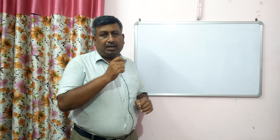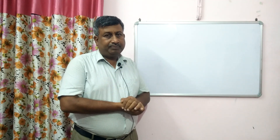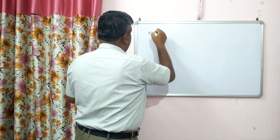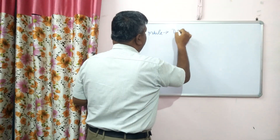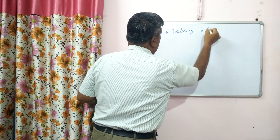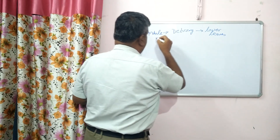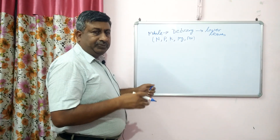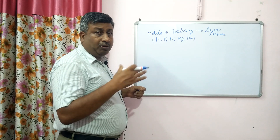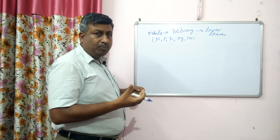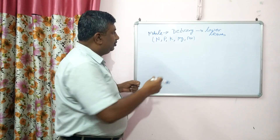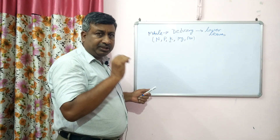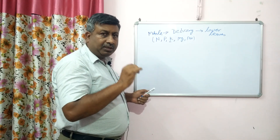Potassium deficiency symptoms are very specific and these symptoms occur on older leaves. Potassium is mobile in plants. Nutrients are actually of two types: mobile and immobile in plants. If a nutrient is mobile in a plant, deficiency symptoms appear on lower leaves. Mobile nutrients include nitrogen, phosphorus, potassium, magnesium, and molybdenum. If a nutrient is immobile, symptoms appear on terminal buds — for example, calcium and boron. If less mobile, symptoms appear on younger leaves. So potassium, being mobile, shows deficiency on lower, older leaves.